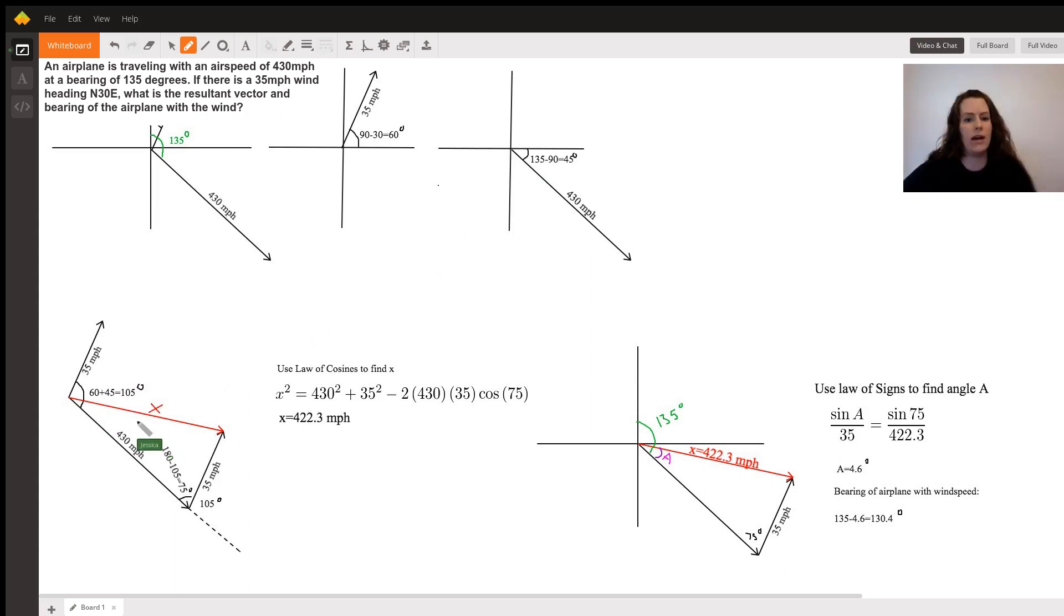If we translate this wind vector down to the tail of the airplane vector and extend the airplane vector, we get that this angle is also 105 degrees because none of our angles change, so it would have to remain the same.